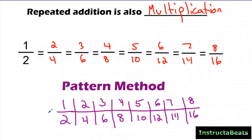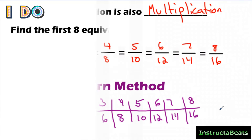And I just used addition instead of multiplication to come up with these same fractions. One-half is equivalent to two-fourths, three-sixths, four-eighths, five-tenths, six-twelfths, seven-fourteenths, and eight-sixteenths. That's the pattern method — instead of multiplying, we use repeated addition.